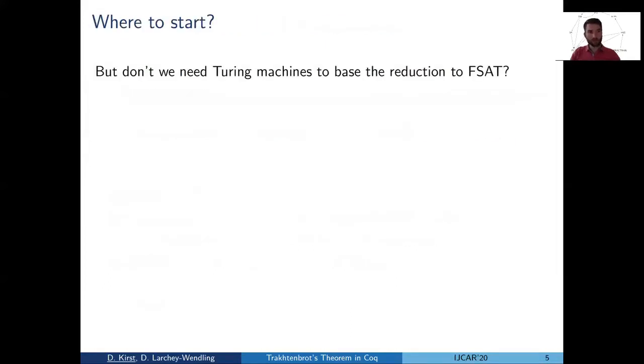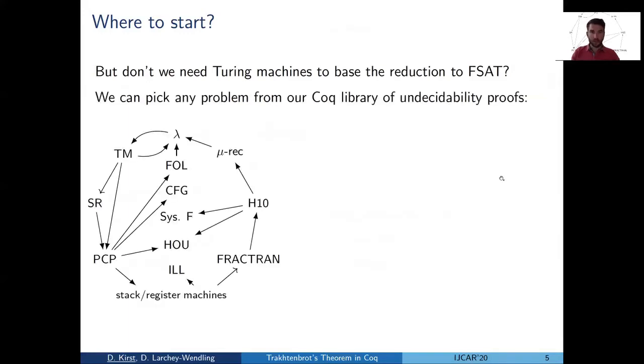But you may ask, we still need Turing machines, right? Because the reduction we have explained to finite satisfiability in the standard strategies was based on Turing machines. And now comes the second simplification: we're working on a library of undecidability proofs.